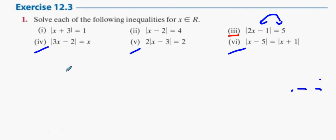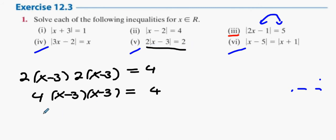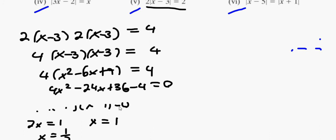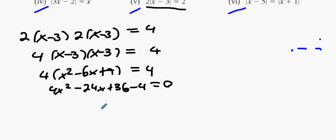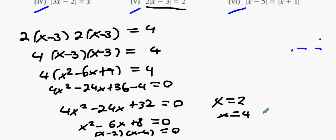Next one — square both sides again. We're going to get 2(x minus 3) times 2(x minus 3) equals 4 on the other side. So 4 times x squared minus 6x plus 9 equals 4, giving 4x squared minus 24x plus 36 minus 4 equals 0, which is 4x squared minus 24x plus 32. Divide by 4 to get x squared minus 6x plus 8, which factors as x minus 2 times x minus 4 equals 0. So x equals 2 and x equals 4.